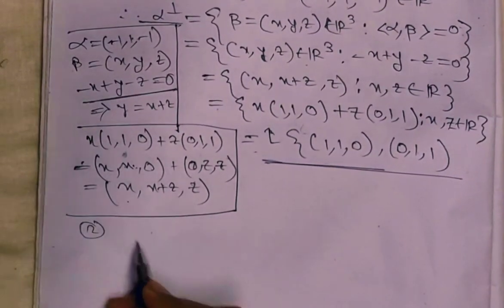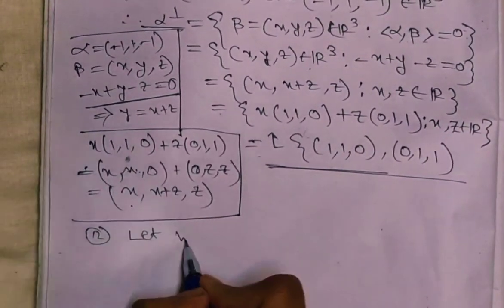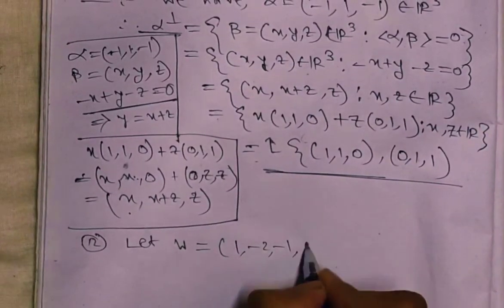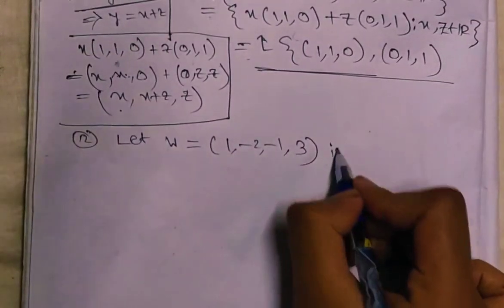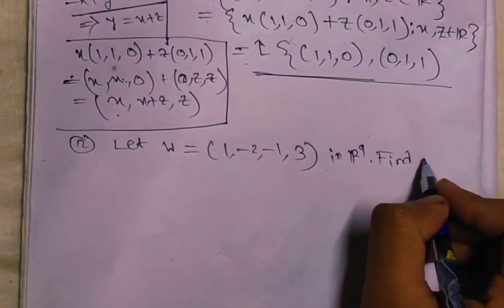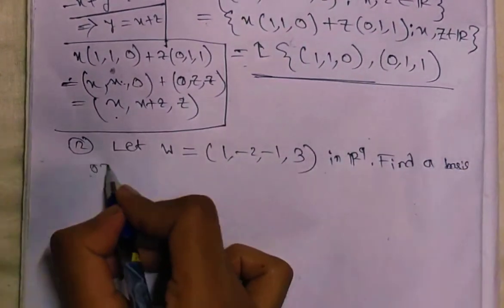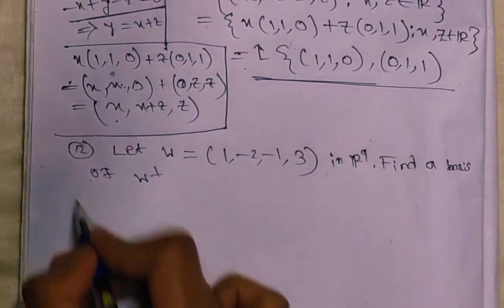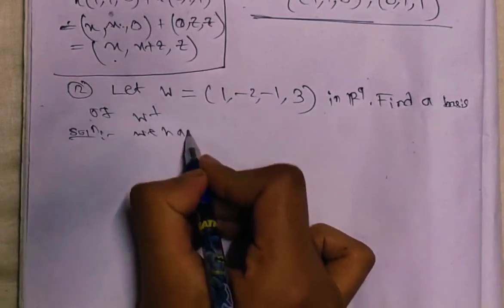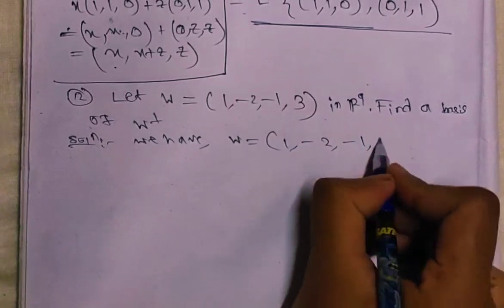Second example: let W = (1, -2, -1, 3) in R⁴. Find a basis of W⊥. Solution: we have W equals (1, -2, -1, 3).